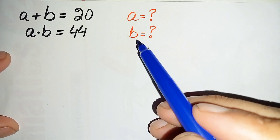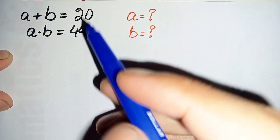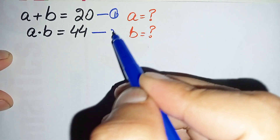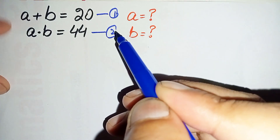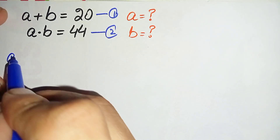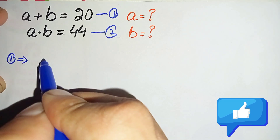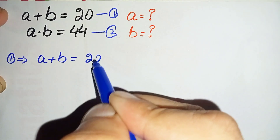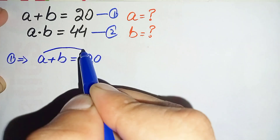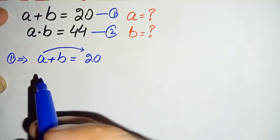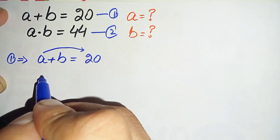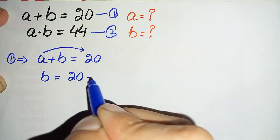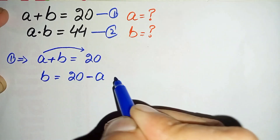Here we will try to find the values of a and b. We will call a plus b = 20 equation number one and a times b = 44 equation number two. From equation one, we move a to the right-hand side to make b the subject, giving us b is equal to 20 minus a. We will call this equation star.